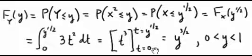And then t when you put in 0 you just get 0. So we end up with the cumulative distribution function of y is y to the 3 halves. And it's defined over the support of y which is from 0 to 1.